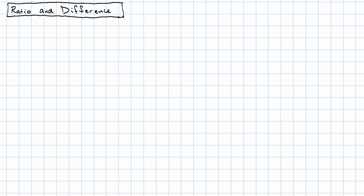Given a pair of numbers, there are two ways that we can describe the relationship between them. We can describe an additive relationship between two numbers, or we could describe a multiplicative relationship between two numbers.